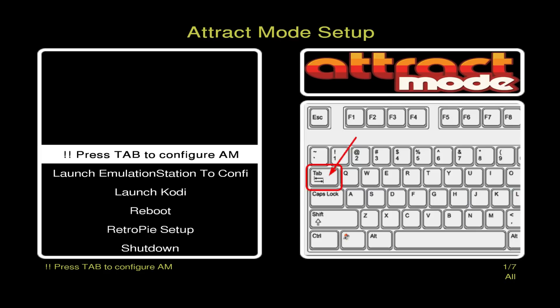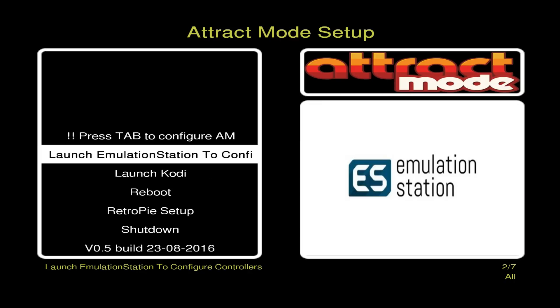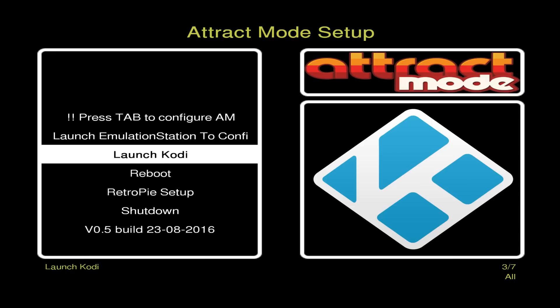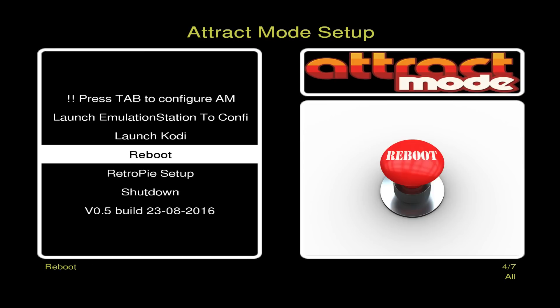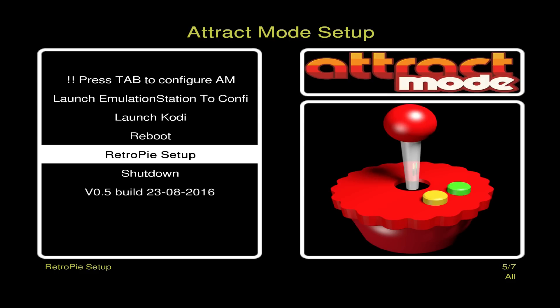In the main menu, the first option is just instructions — it says Press Tab, it doesn't do anything. Then you've got the option to go into EmulationStation, which edits the startup file, reboots the Pi, and takes you to EmulationStation. It'll keep doing that until you choose to boot back to Attract Mode. You can also launch Kodi from this interface, do a simple reboot, or go into the RetroPie setup script which gives you a lot of options to tweak.